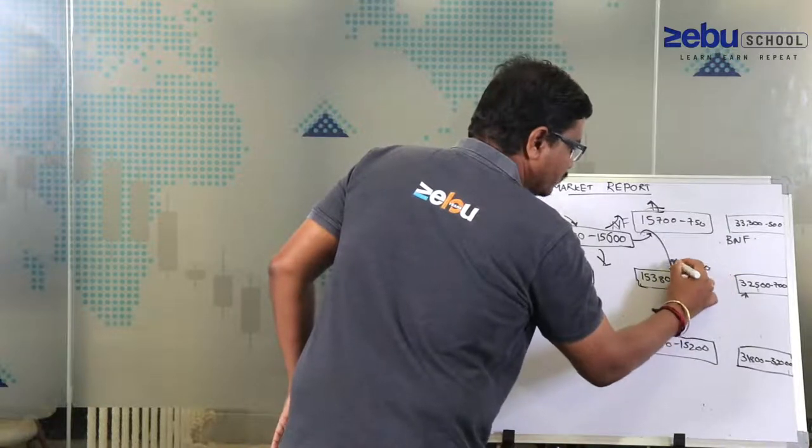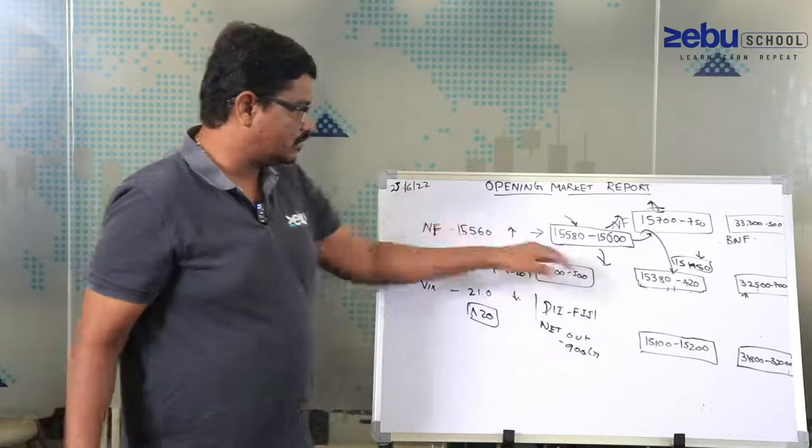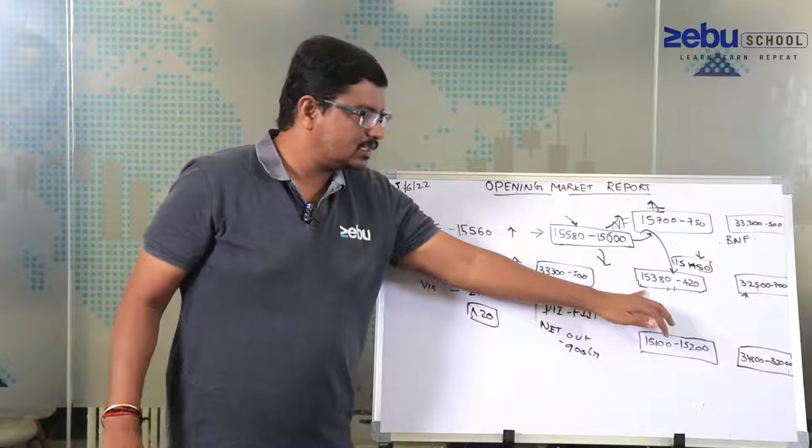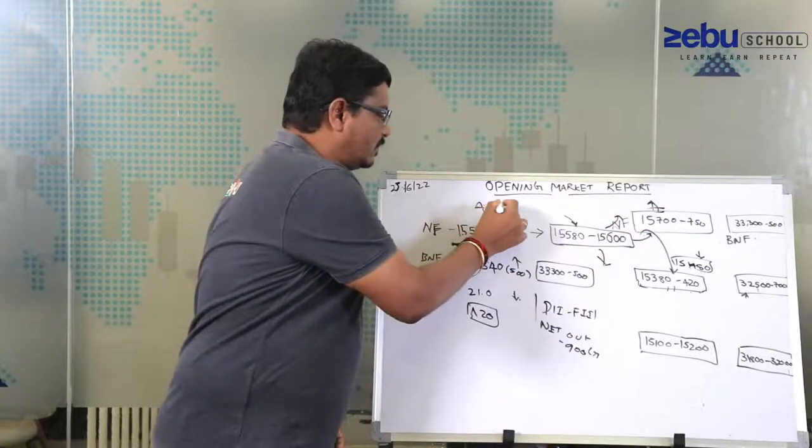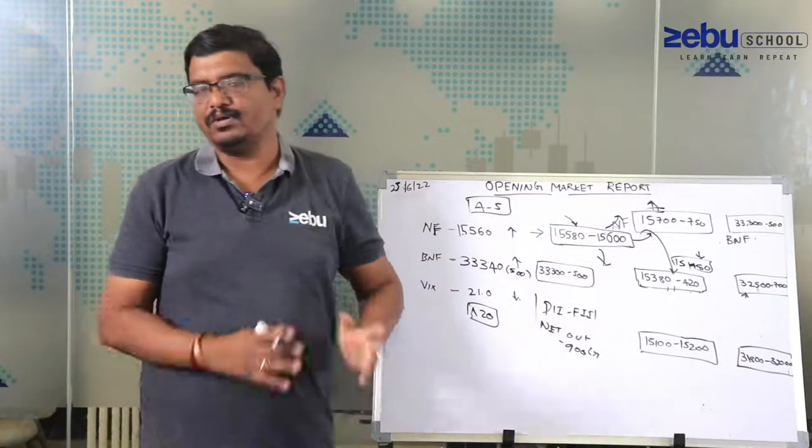15,480 level is the next support in case if there is going to take a support, and then from that support it has to rise. Otherwise again this is the swing level which you have in mind. Again next four to five days, unless and until this level is taken out, I am not going to take a fresh view.